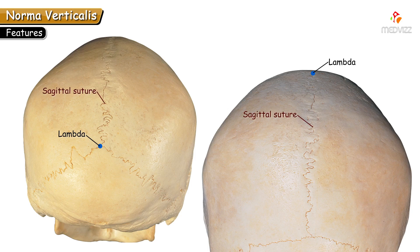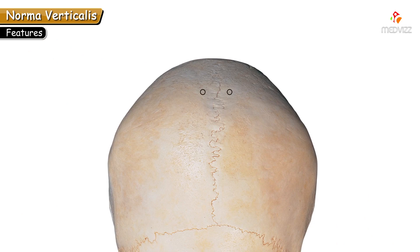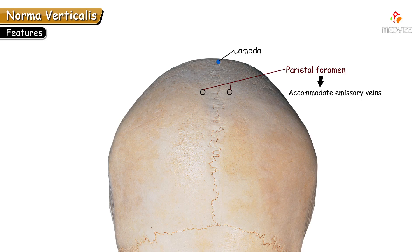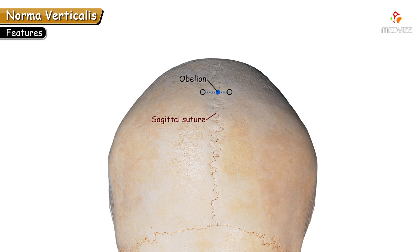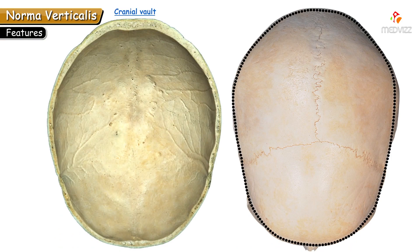Lambda is the meeting point of the sagittal suture with the lambdoid suture. The tiny foramina observed on each side of the sagittal suture over the parietal bone are parietal foramina, most prominent about 3 to 3.5 centimeters above the lambda — these transmit emissary veins. The intersecting point between the two parietal foramina over the sagittal suture is obelion, an important landmark indicating formation of the sagittal suture in the fetal skull.